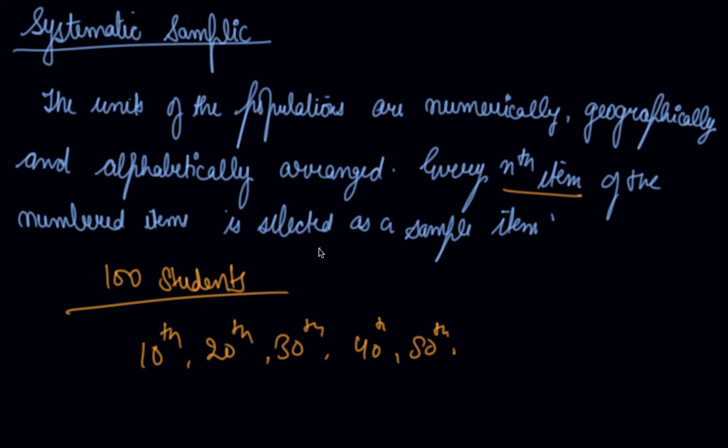Now, let's suppose there are 100 students, you are selecting every 5th item. So like 5th, 10th, 15th, 25th, 30th, 35th. This is the systematic sampling in which you select on the basis of numerically, geographically, or alphabetically arranged data. Every nth item of the numbered items is selected as the sample.